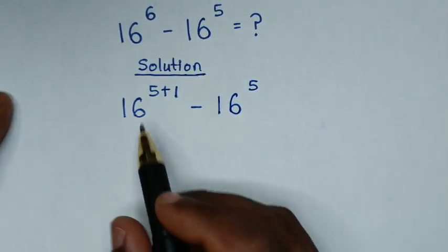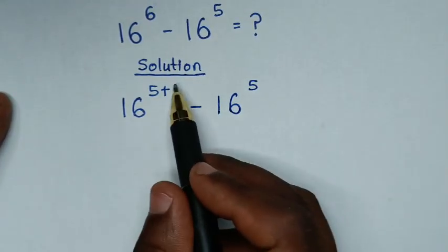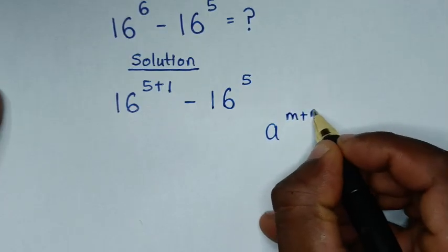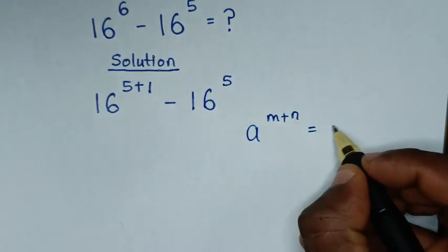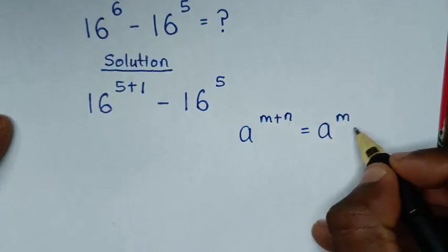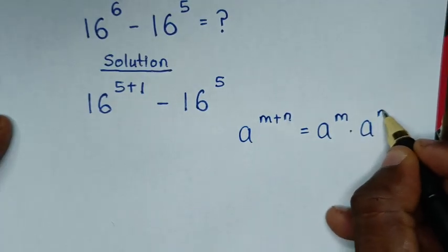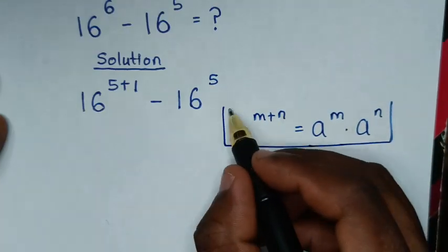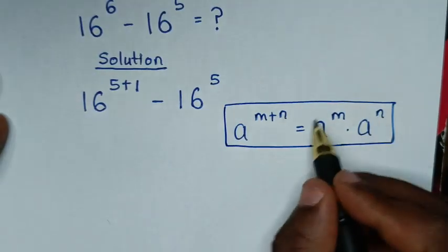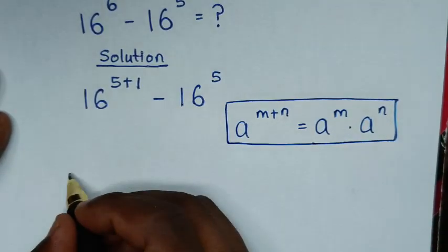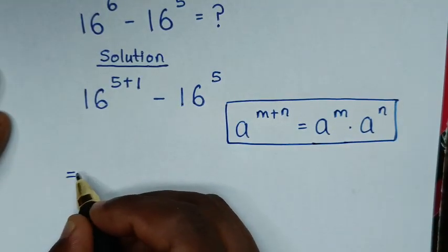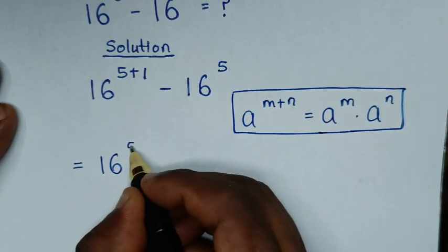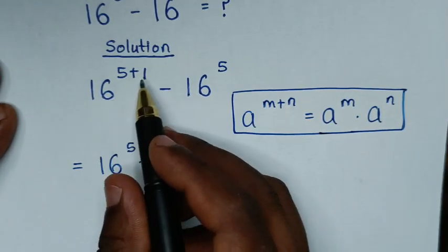In the next step, this part is in the form of the rule a power of m plus n, which is equal to a power of m times a power of n. So from this rule, we will apply this form, and it will be equal to 16 power of 5 times 16 power of 1.